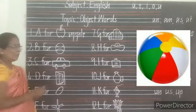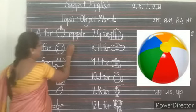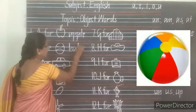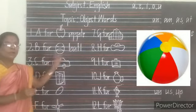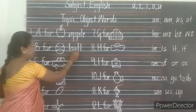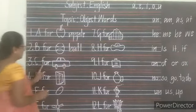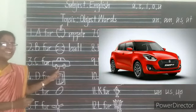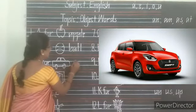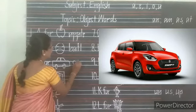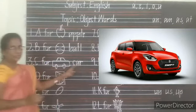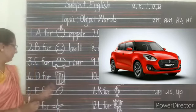B — Ball. B-A-L-L, Ball. B-A-L-L, Ball. Next, C — Car. C-A-R, Car. C-A-R, Car.